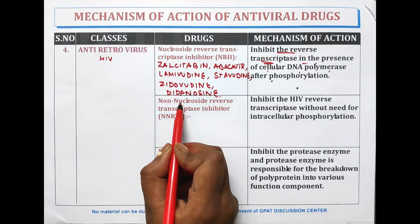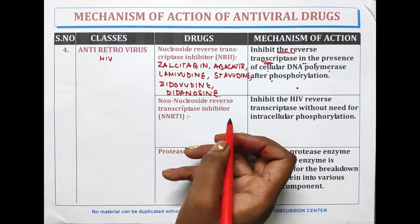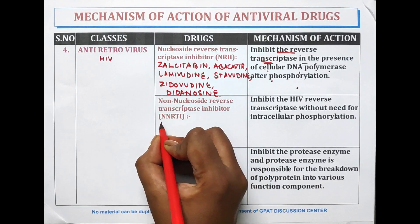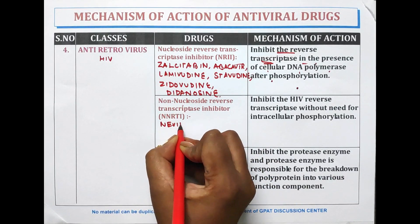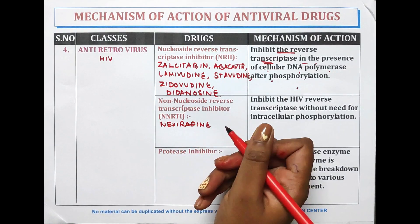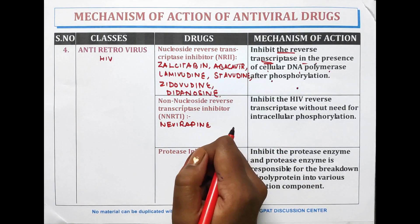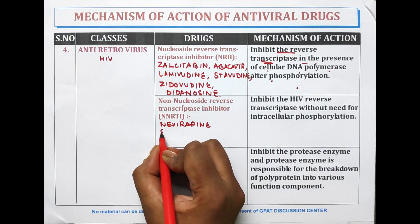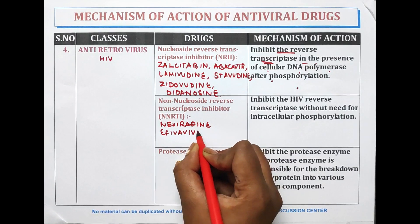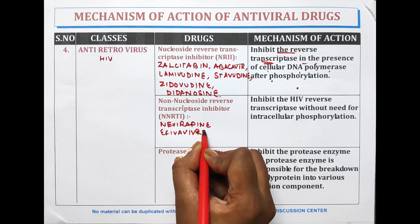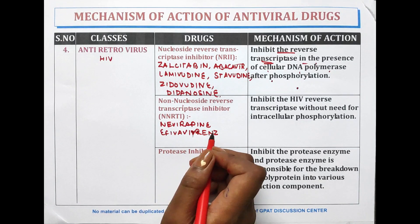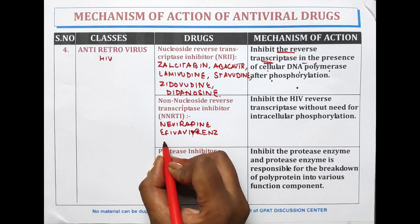NNRTIs — non-nucleoside reverse transcriptase inhibitors. The drugs belonging to this category are nevirapine, efavirenz, and delavirdine.